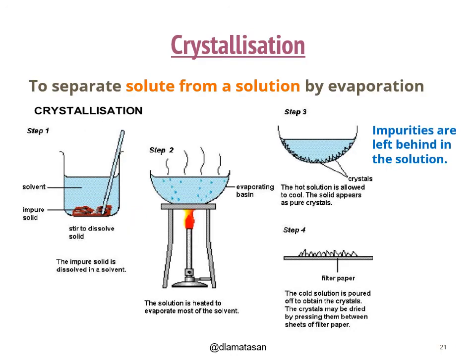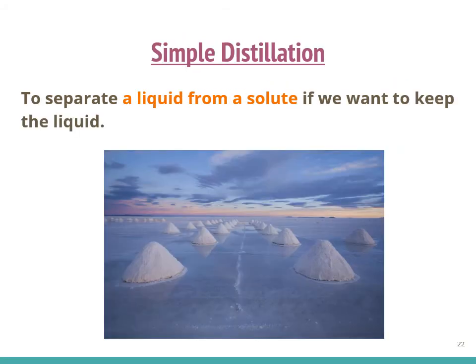The third separation technique is crystallization. It is used to separate a solute from a solution by evaporation. Imagine we have an impure solid that is a mixture of A and B — both substances are dissolved in a chosen solvent. After heating the solution until saturated, the solution is left to cool. During this period, the pure substances will emerge as crystals while the impurities remain in the solution. The crystals may then be filtered off, washed with a little cold water, and dried in air or in an oven.